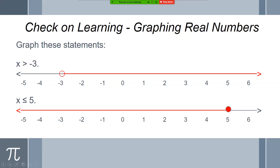Since it's greater than, it would be all numbers to the right of negative three. The next one is x is less than or equal to five. The key here is it includes the number five because we have equal to. So it'd be a solid dot, and then all of the numbers to the left of the solid dot. Hopefully everybody got those right. If not, go ahead and talk to one of your classmates.